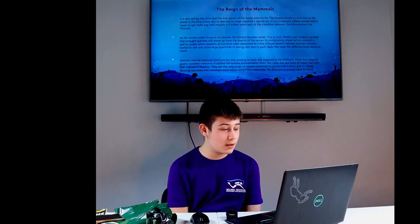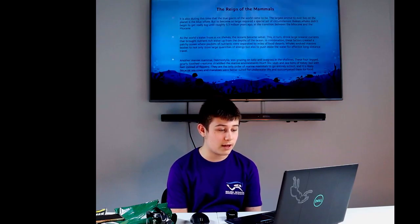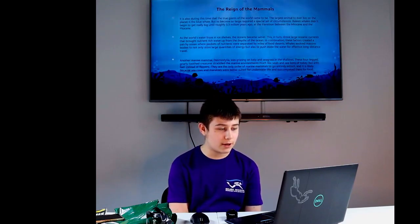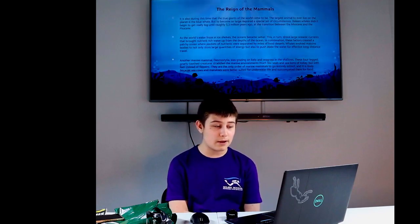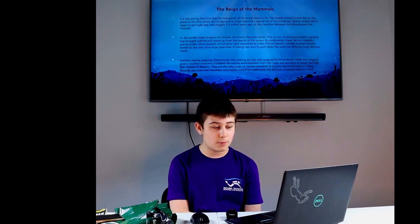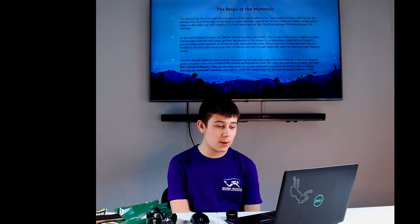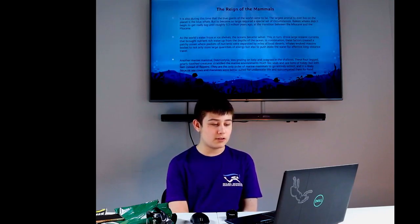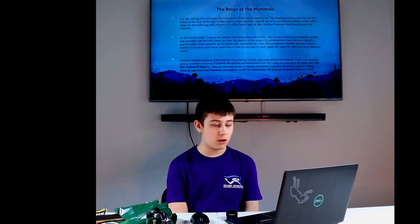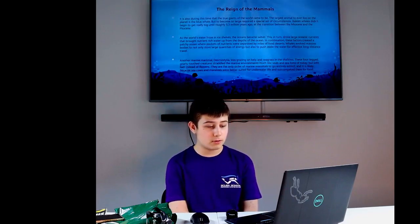The Reign of the Mammals: It is also during this time the two giants of the world came to be, the largest animal ever to live on the planet, the Blue Whale. To become so large, it requires a special set of circumstances. Baleen whales didn't start to become large until roughly 5.3 million years ago, with the transition between the Miocene and the Pleistocene. As the world's waters froze in ice sheets, the ocean became saltier. This in turn drove large oceanic currents that brought nutrient-rich water up from the depths of the ocean. In combination, these factors created a patchy ocean of pockets of nutrients separated by miles of food deserts. They also evolved massive bodies not only to store large quantities of energy, but to also push aside water for long distance travel.